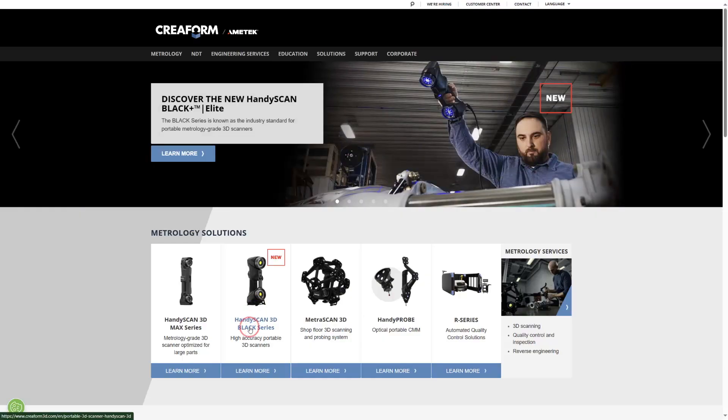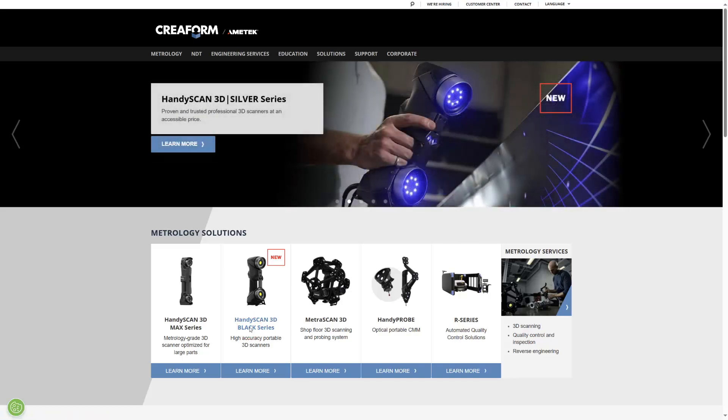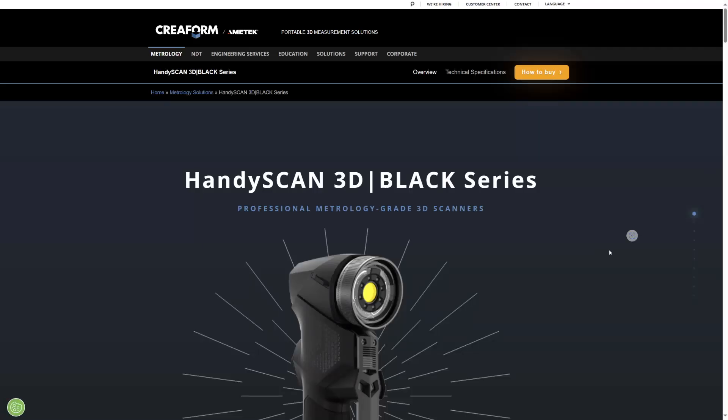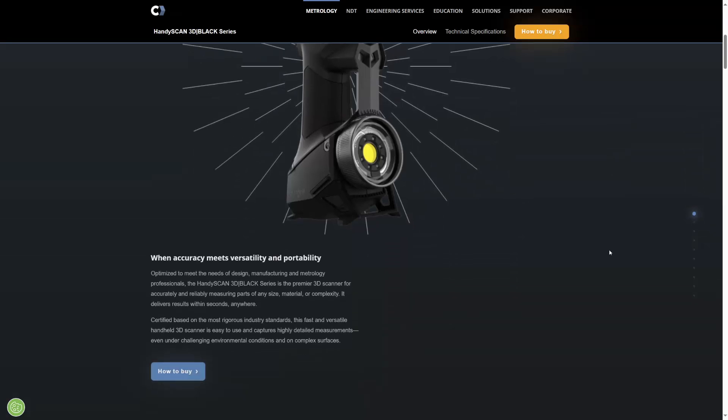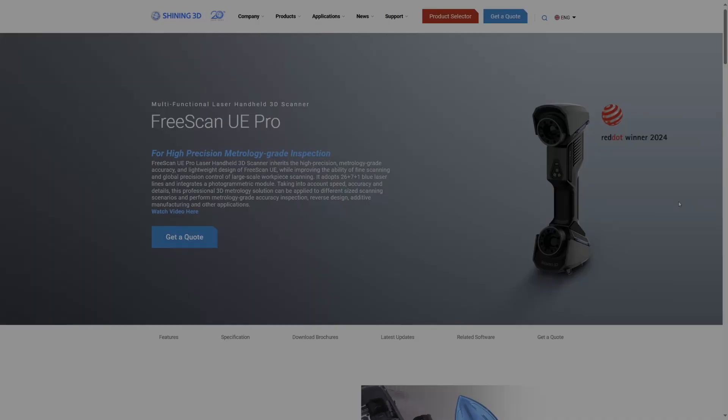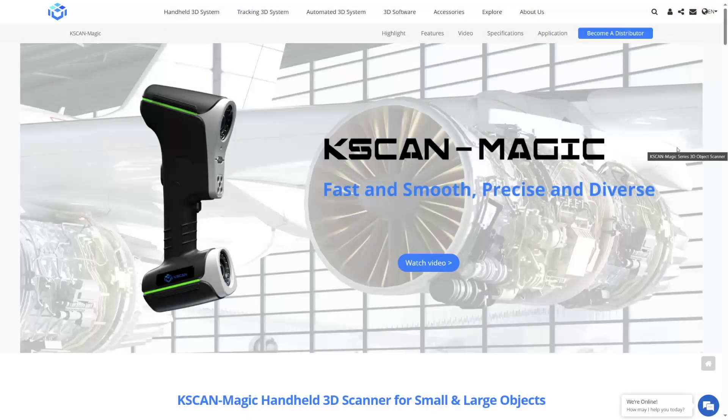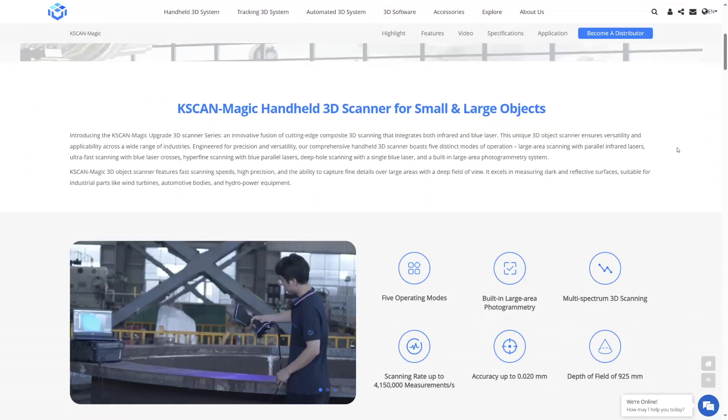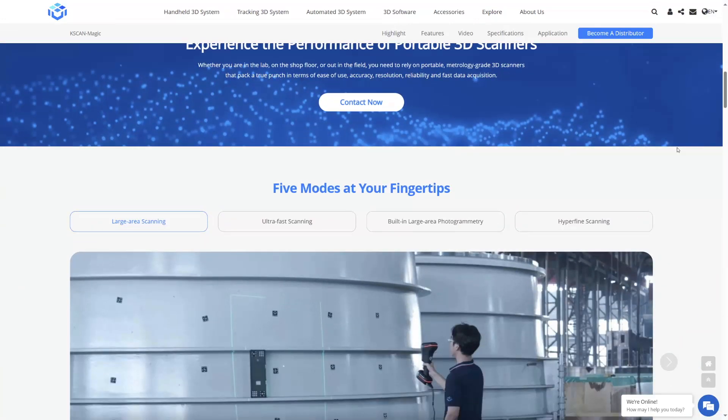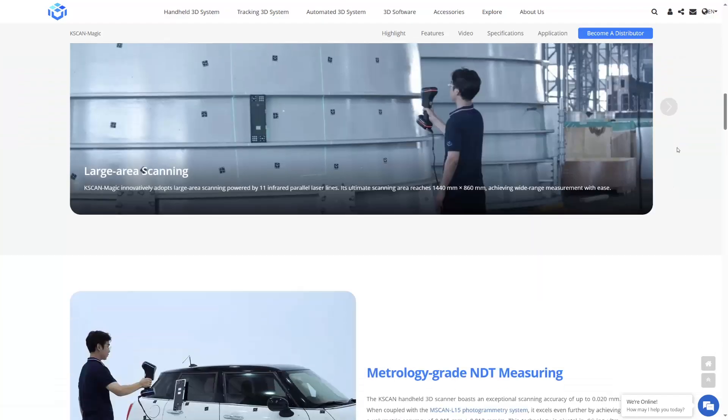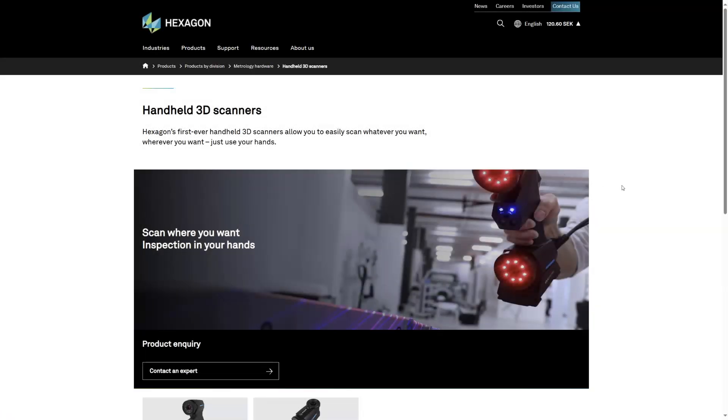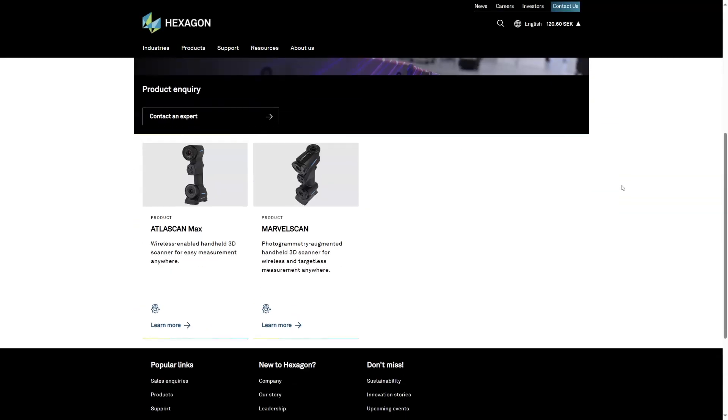There's a few competitors to this particular scanner being made currently. There's Creiform, which has been doing this type of thing for a lot longer. There's Shining 3D and 3D Scantec, which are two Chinese companies that make much cheaper options that seem to do the same thing. I haven't used them. And then Hexagon just entered the market as well.